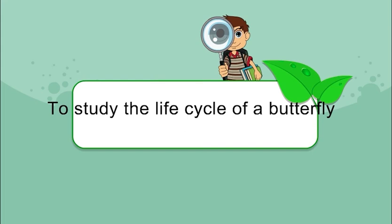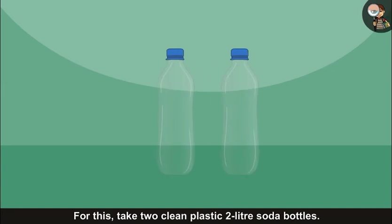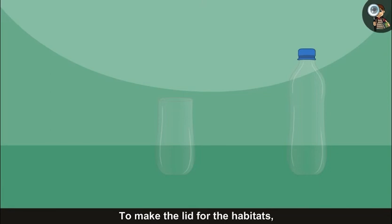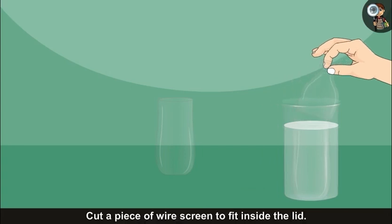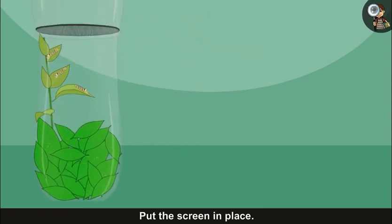To study the life cycle of a butterfly, make a caterpillar habitat. For this, take two clean plastic two-liter soda bottles. Cut off the top around the neck of one of the bottles to make the lid of the habitat. Set the base of the second bottle in warm water and then pull it off. Cut a piece of wire screen to fit inside the lid. Put the screen in place.